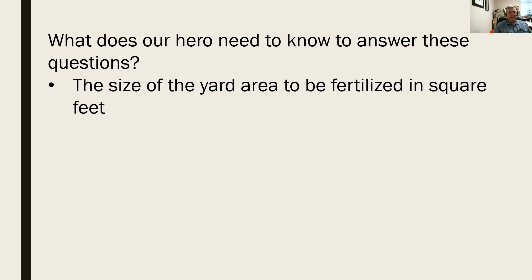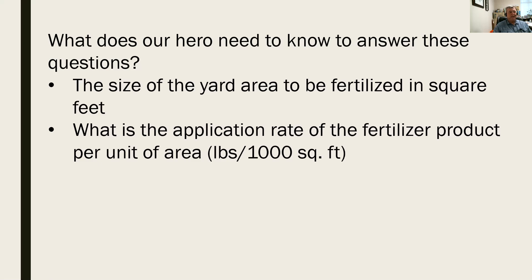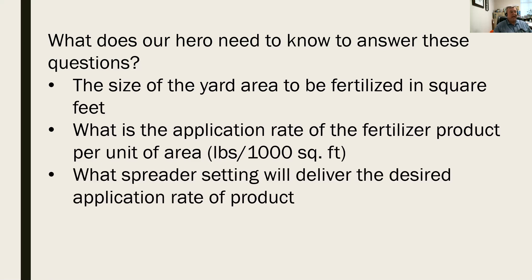There's some information our hero needs before answering these questions. First, they need to know the size of the yard area to be fertilized, preferably in square feet — the treatment area in square feet. They also need to know the application rate of the fertilizer product per unit of area, specifically how many pounds of product to apply for every 1,000 square feet. And finally, what spreader setting delivers that application rate.